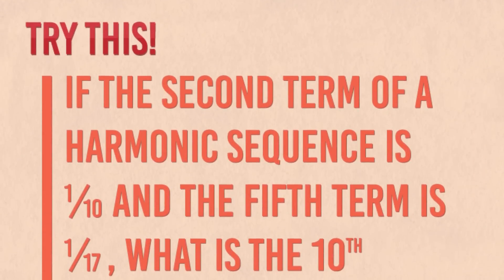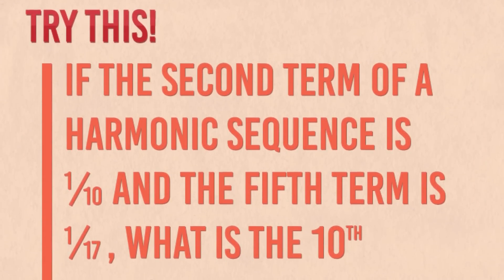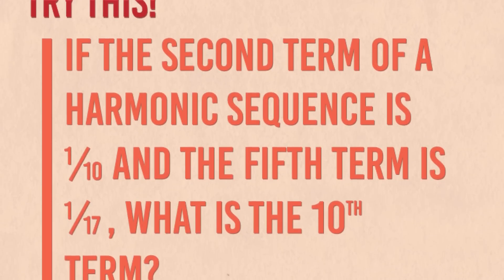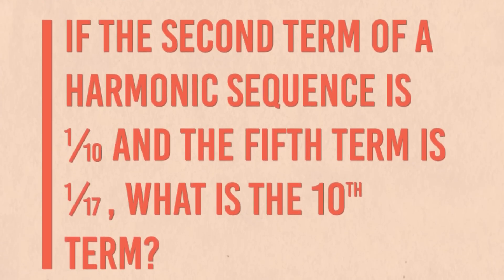If you want more practice, try this: If the second term of a harmonic sequence is 1 over 10 and the fifth term is 1 over 17, what is the tenth term?